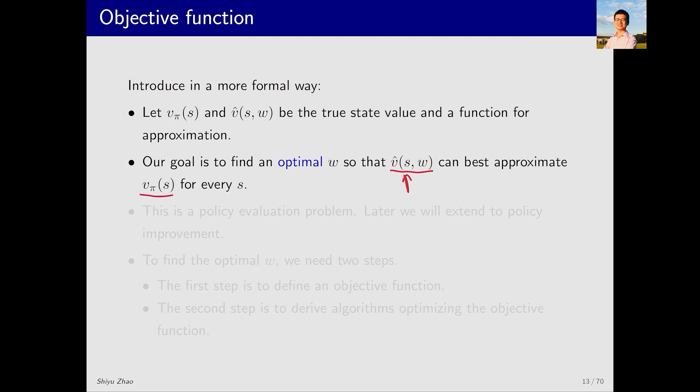Our goal is to make the estimated value as close to the true value as possible. The structure of the v hat function can be a linear function that corresponds to a straight line or a parabola or a non-linear function represented by a neural network. Once the structure of the function is determined, what we can adjust is w. What we need to do is to find the optimal w that makes v hat as close to v_π as possible.